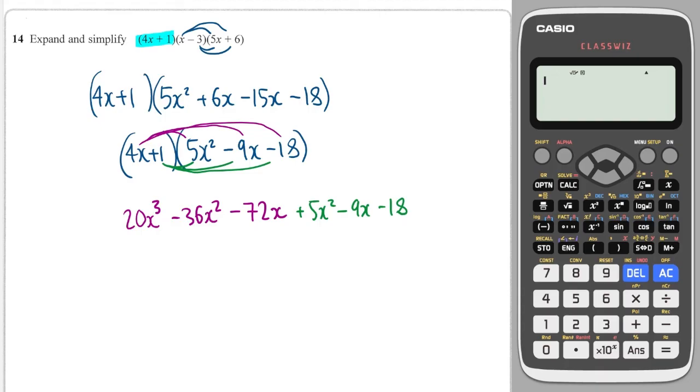Then we will always have just a single x cubed. And the x squared and the x squared there are minus 36 and plus 5, which gives you minus 31x squared.